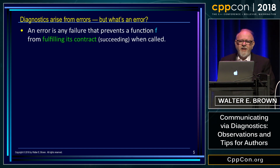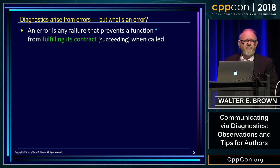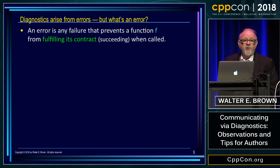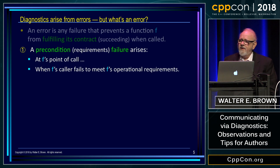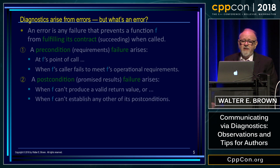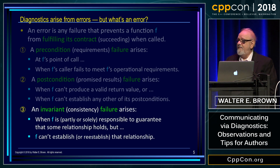We all know diagnostics arise from errors. What's an error? Any failure that prevents some function from fulfilling its contract. And this becomes increasingly important now that C++20 will have built-in support for contracts. Of course, there are three kinds of failures when you have contracts involved: precondition failures, post-condition failures, and invariant failures.